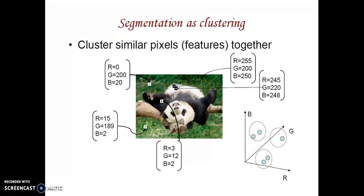This is segmentation using clustering. Clustering groups similar pixels together. In a media image, we contain the R, G, and B values of a particular region. We group the grassland into one group, white regions into one group, and black regions into one group.